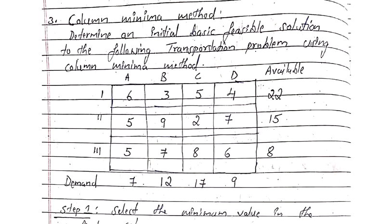Hello everyone. In the previous video we discussed the transportation problem using the northwest corner rule and the row minimum method. Today we shall discuss the third method: solving the transportation problem using the column minimum method.